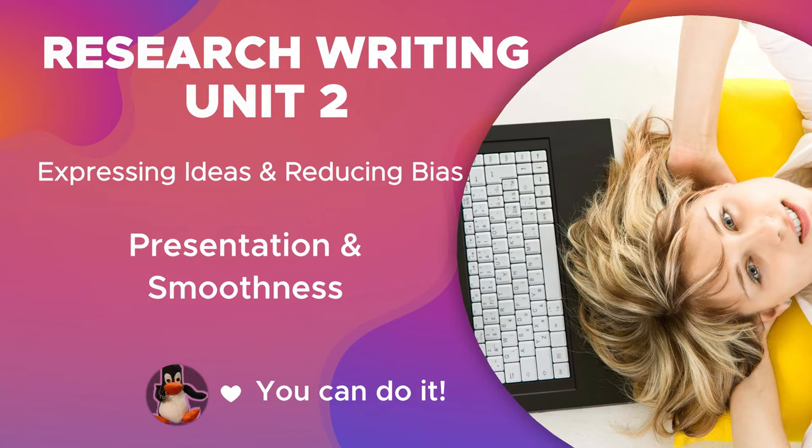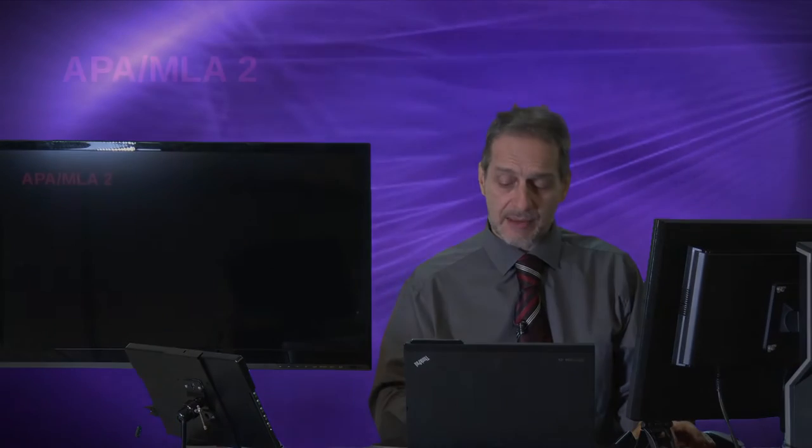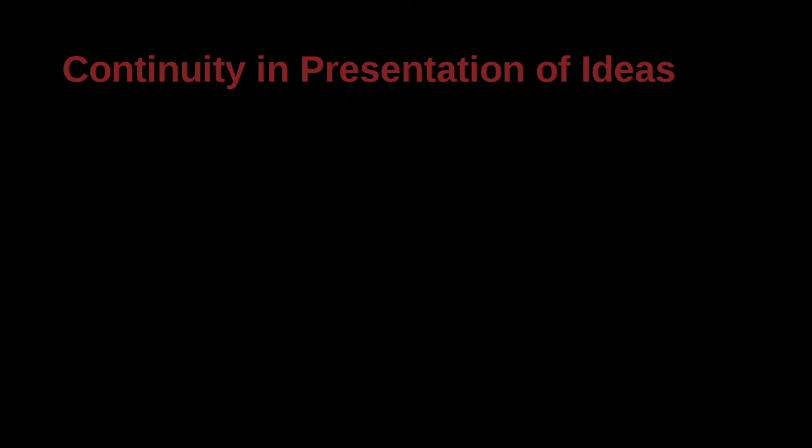This is unit two of our APA MLA course, where we're going to today focus on how to keep your writing concise, clear, and not to make people angry by writing the wrong kind of words. Then we're going to look at specific examples, sentence by sentence examples, which is going to be a little bit boring, but very practical.